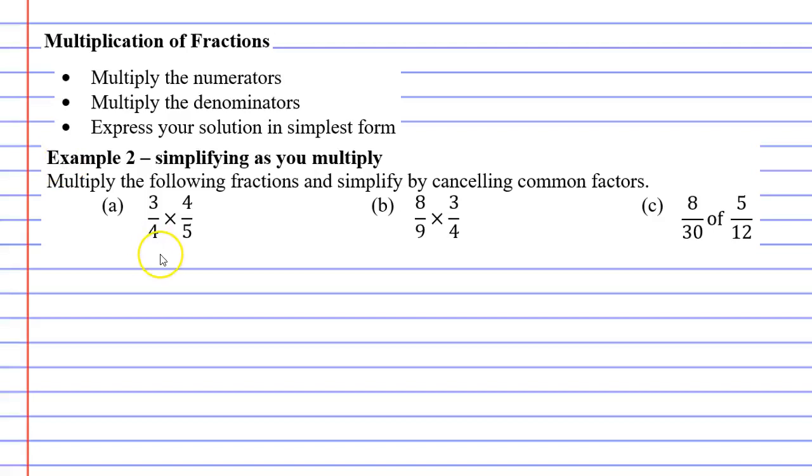In this video, we're going to complete example 2. In the last video, we learned to multiply fractions first and simplify afterwards. In this video, we're actually going to simplify while we multiply, and we do this by cancelling common factors.